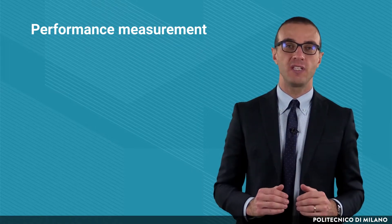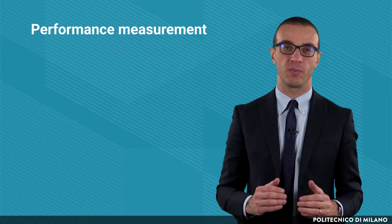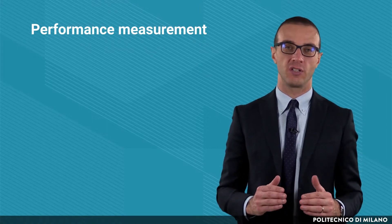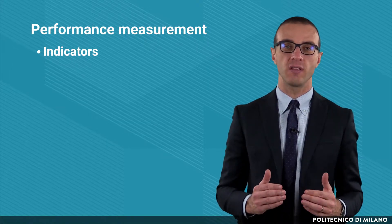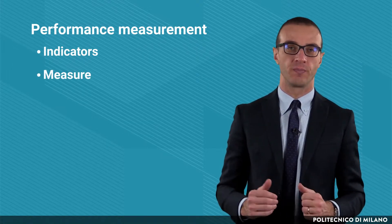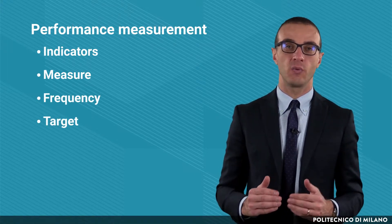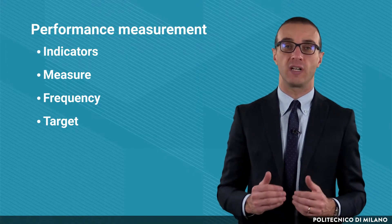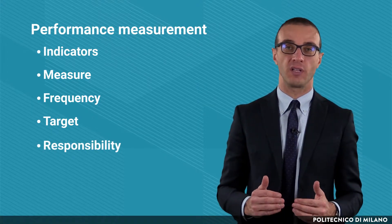There are different elements to be defined in order to create a performance measurement system. Each element answers a question: a set of indicators, which answers to the question 'what'; the measure of the indicators, 'how'; the frequency of the measurement, 'when'; the targets with which the results of the measurement are compared, 'which target'; and the functions in charge of the measurement, 'who'.